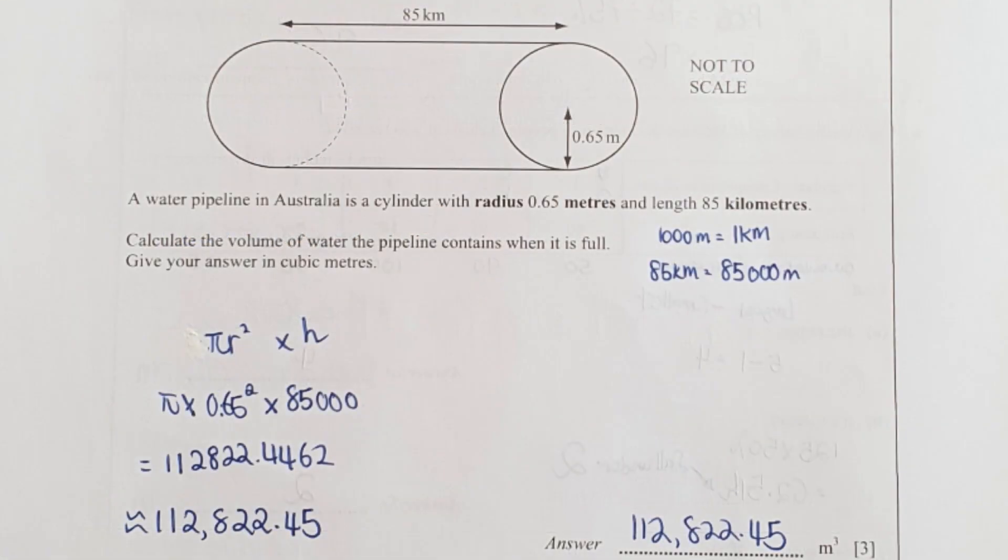Water pipeline in Australia is a cylinder with a radius of 0.65 meters and length of 85 kilometers. So π r² times h, fill up the blank: 0.65 meters you remain it, but you're required to change the 85 kilometers into 85,000 meters. Your final answer is 112,822.45.